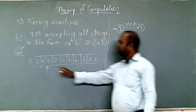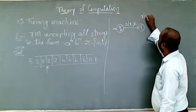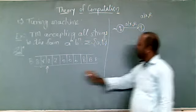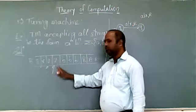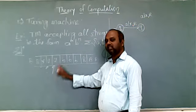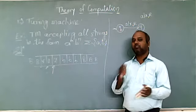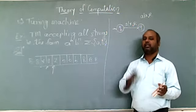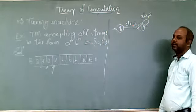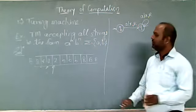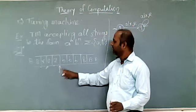After replacing the first a with x and moving right, the head is now at the next a. In state q1, we skip all a's — skipping means keeping a as it is: input a, replace with a, move right. This is a self-loop on q1 for a's. All remaining a's are skipped this way.